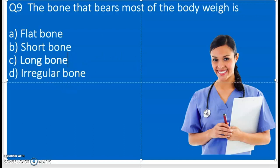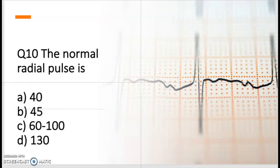The last question: the normal radial pulse is, is it 40 beats per minute, 45 beats per minute, 60 to 100, or 130? What is the correct answer? This question is often on prometric: what is the normal radial pulse?